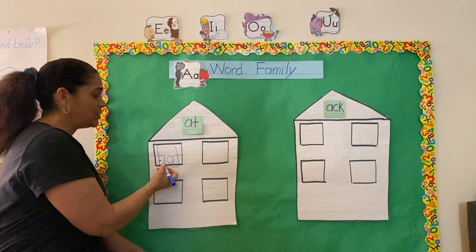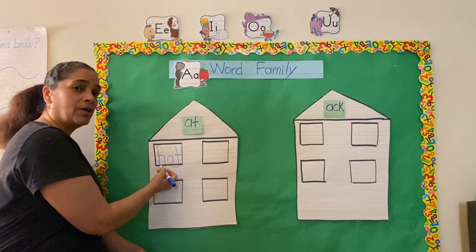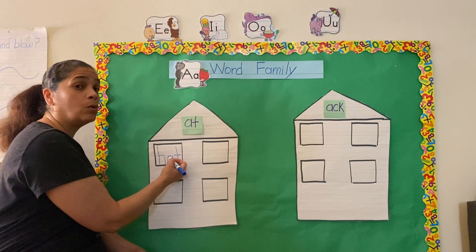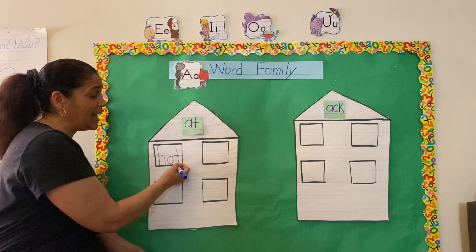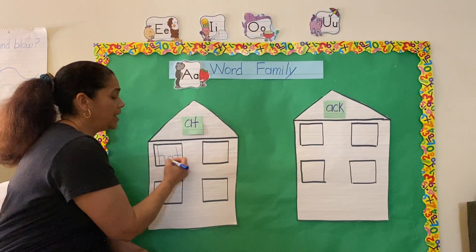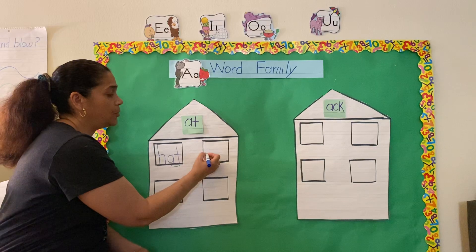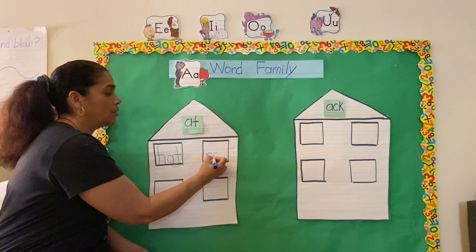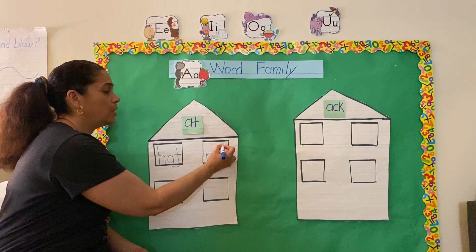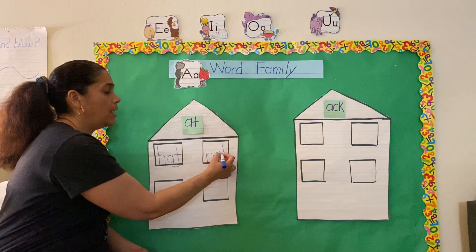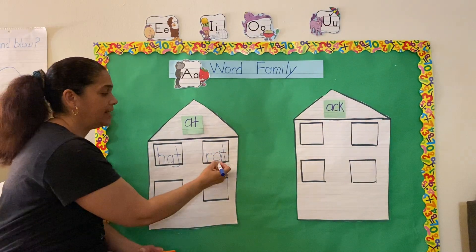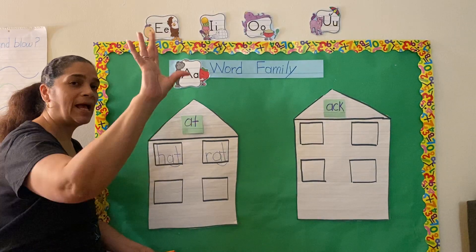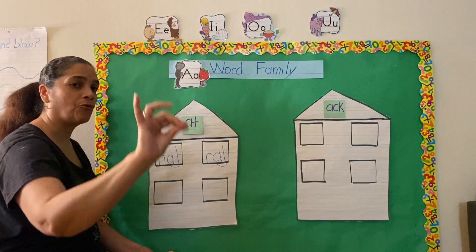Now, if we change our first consonant, keeping our pattern or word family -at, let's change the H to an R. So let's tap that out: r — at — rat.